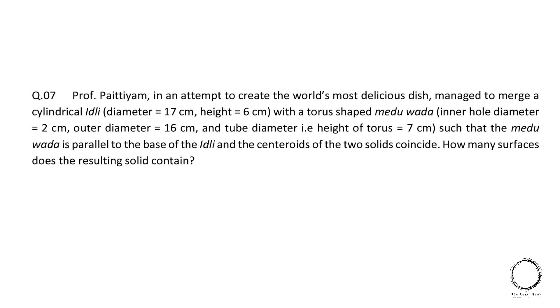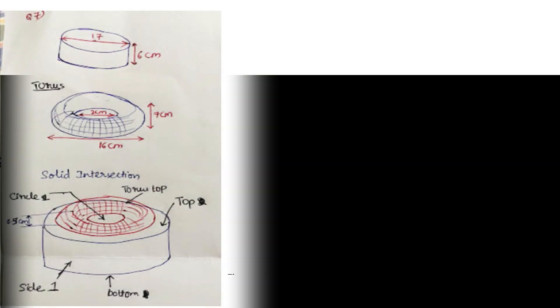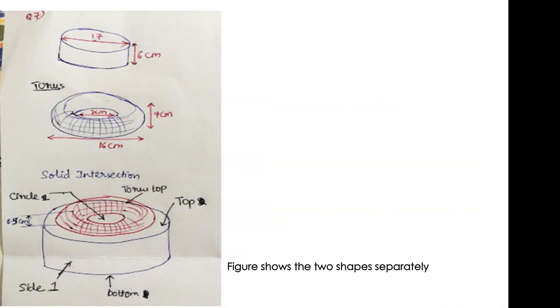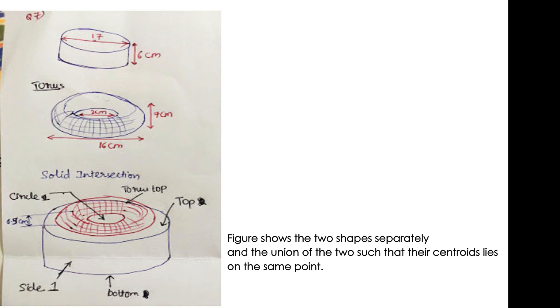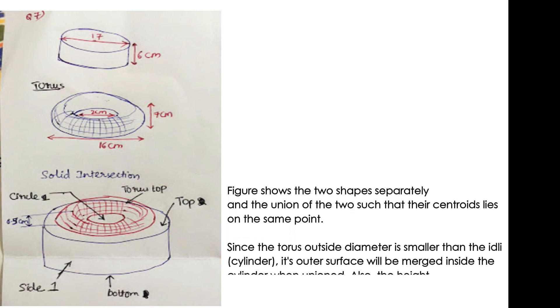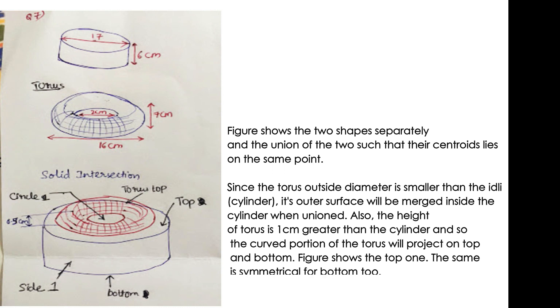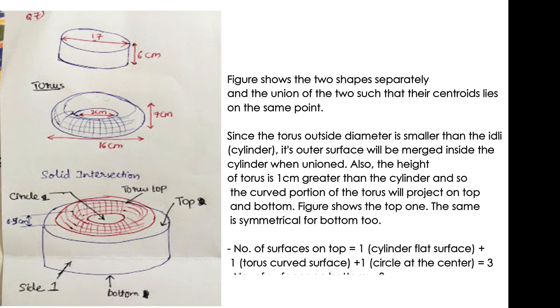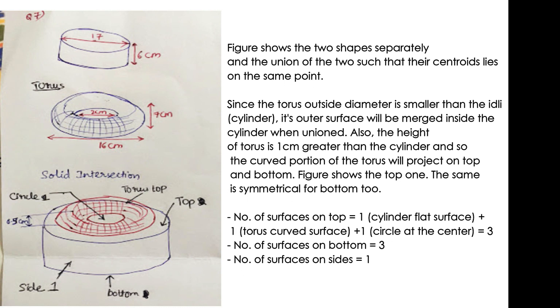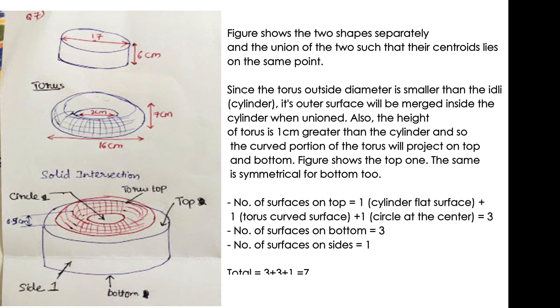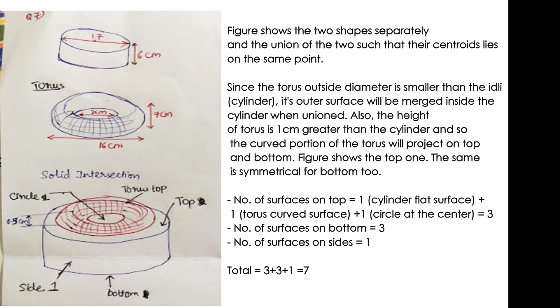How many surfaces does the resulting solid contain? So down is the figure which shows the two shapes separately and the union of the two such that their centroids lie at the same point. Since the torus outside diameter is smaller than the idli, its outer surface will be merged inside the cylinder when unioned. Also, the height of torus is 1 cm greater than the cylinder and so the curved portion of the torus will project on bottom and top.